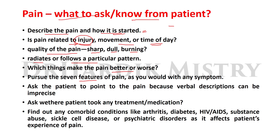The seven attributes of a symptom are as follows. First, location: where is the pain, and does it radiate to any other side? Second, quality: what is it like? Third, quantity or severity: how bad is it? Rate the severity on a scale of 0 to 10.